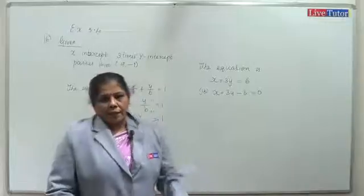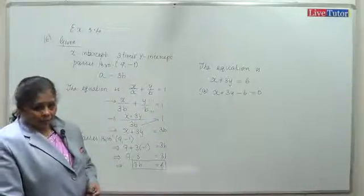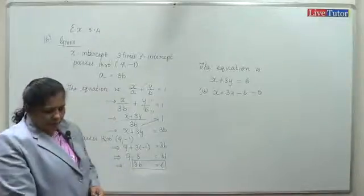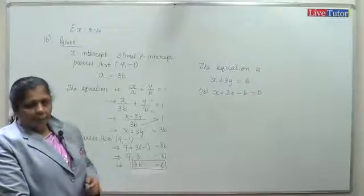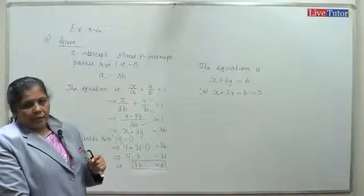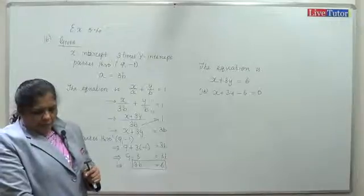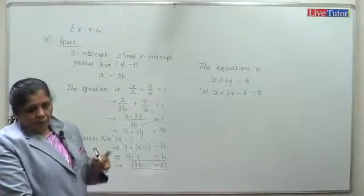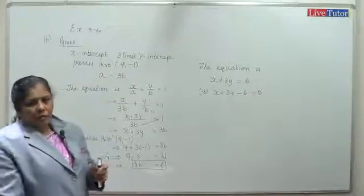Question 17: A straight line cuts the coordinate axes at A and B, where x-axis at A and y-axis at B. If the midpoint of AB is (3, 2), find the equation of AB.